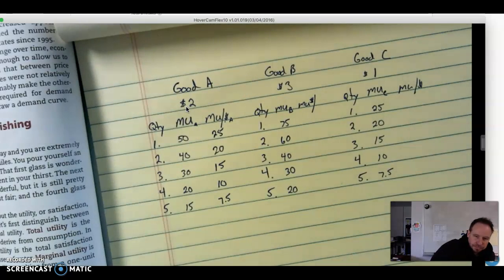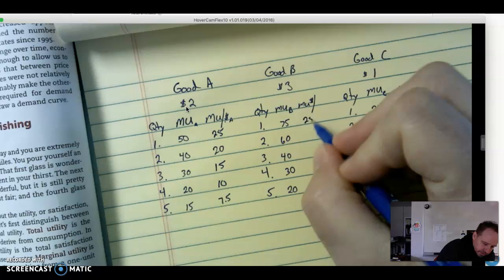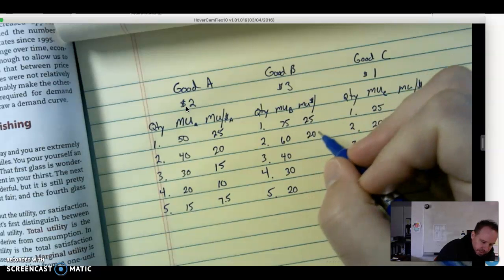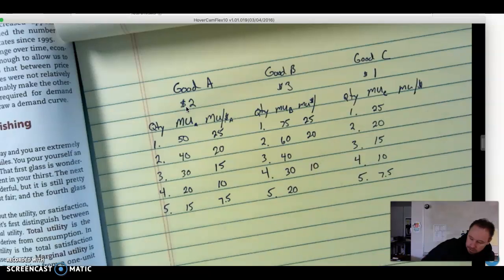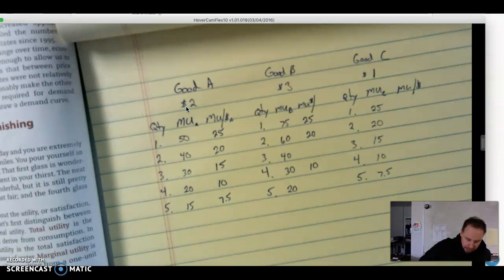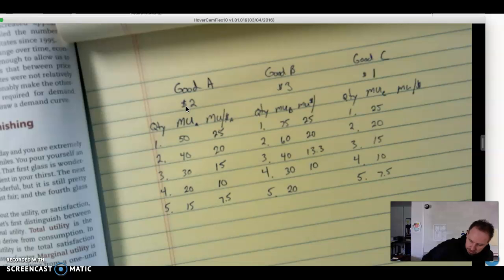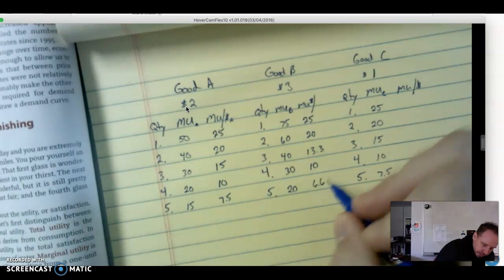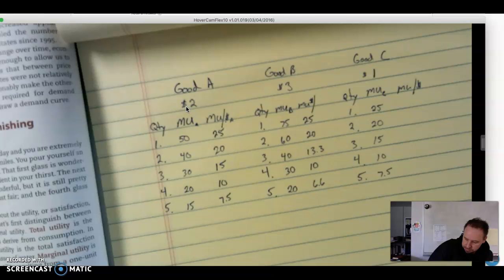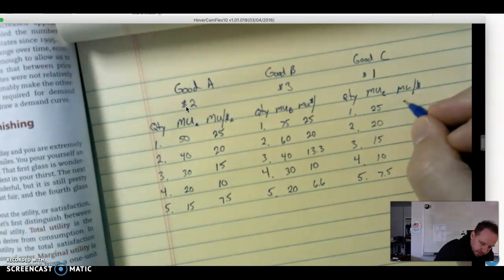Do that for each one of them. So 75 we're dividing by 3: 25, 20, 10. This is 13.3, a little less than 7, and this is 6.6. So that's our utility per dollar. Then we look at C divided by 1 - that's just going to be the same.